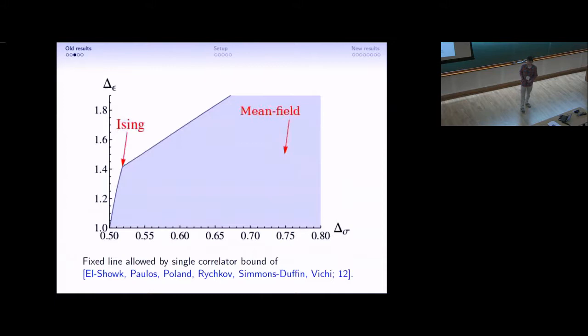Once we understand the endpoints, we can imagine something like this. This is a plot from the homepage of the Bootstrap collaboration. The only thing I've done is added in this arrow to show that the mean field theory is clearly within the blue region. This is the region that's allowed by the constraints of crossing symmetry and unitarity on a single four-point function. It's easy to imagine that the line of fixed points depending on S interpolates between these two regions.